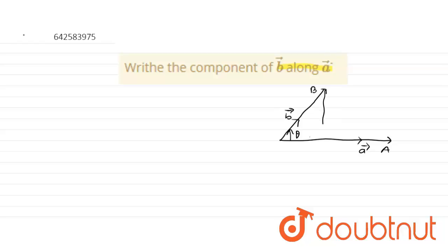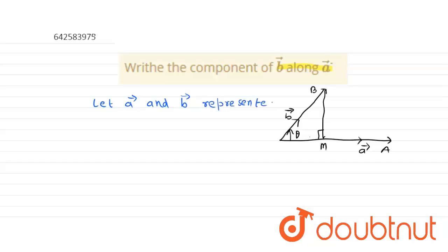Here we draw a perpendicular to OA. This point is A, this point is M. Now let A vector and B vector be represented by OA vector and OB vector, and theta be the angle between them.